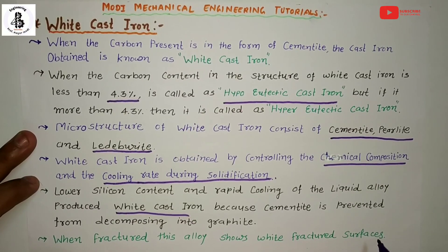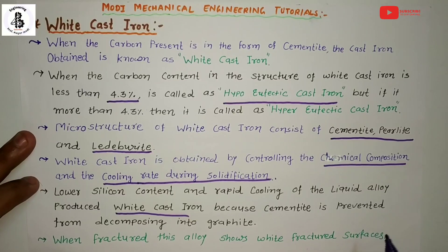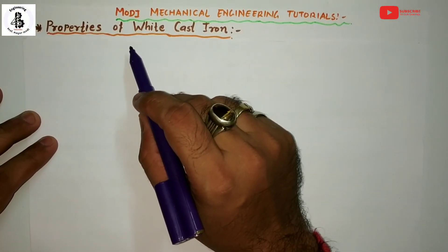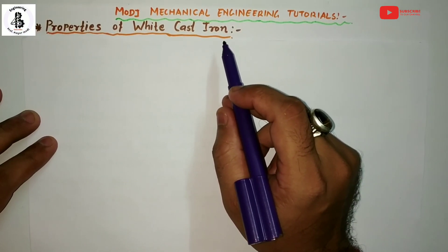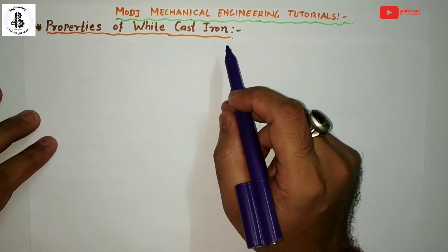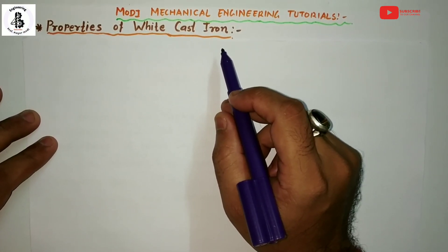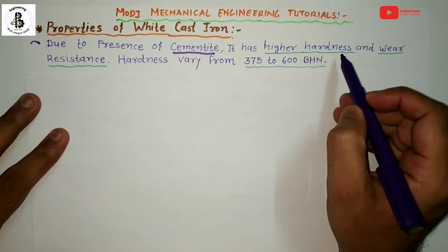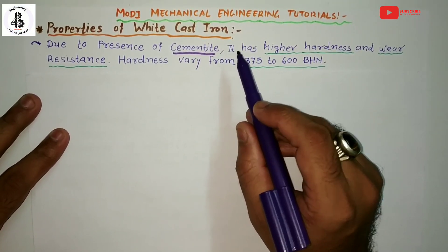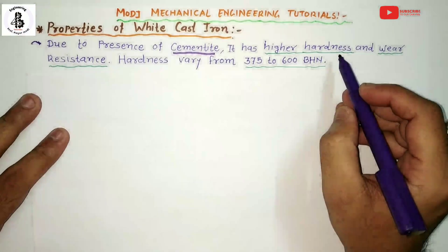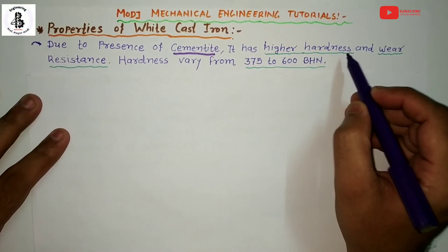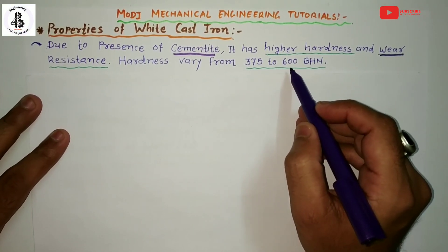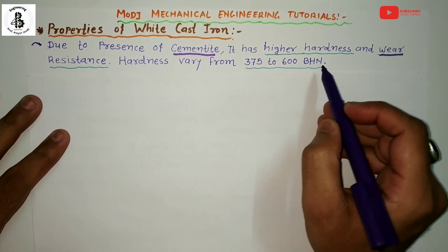That white cross-sectional area is why it is known as white cast iron. Now discussing the various properties present in white cast irons. Due to the presence of cementite, it has higher hardness — cementite representing hardness being present in the material structure. Due to that higher hardness, it has good wear resistance, and the hardness varies from 375 to 600 BHN, that is Brinell Hardness Number.